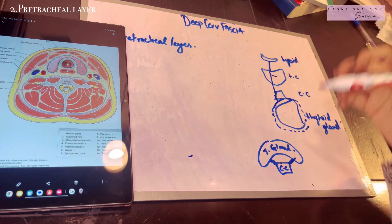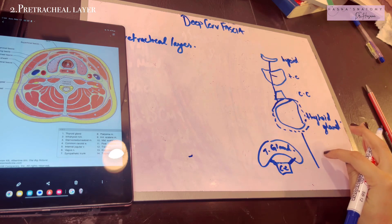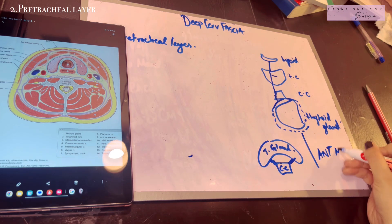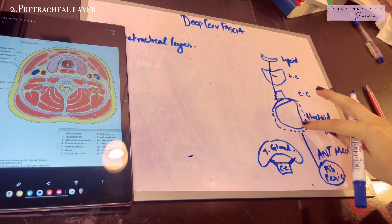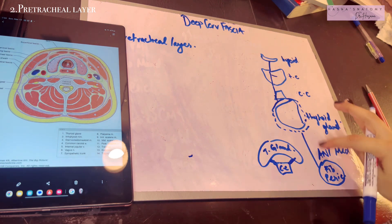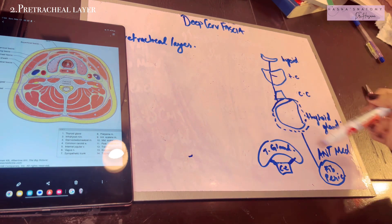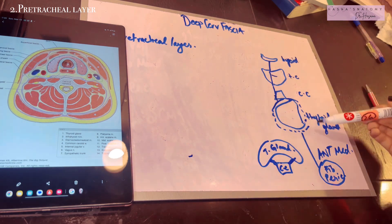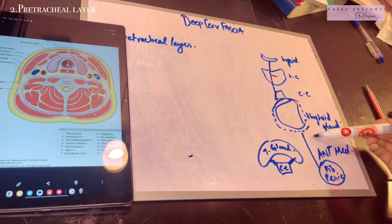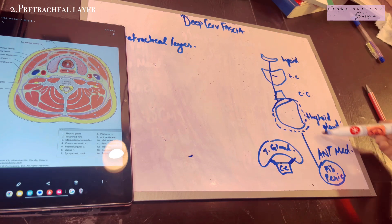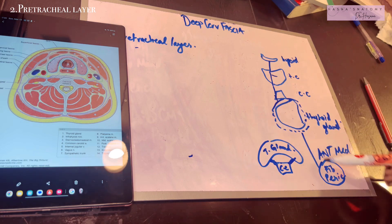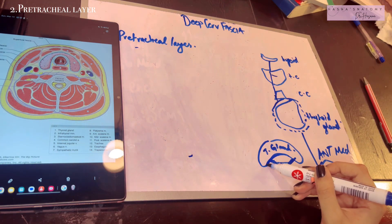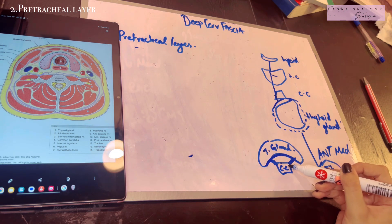Inferiorly, the pre-tracheal layer extends down into the anterior mediastinum because that is where the fibrous pericardium lies — it blends with the fibrous pericardium. This is very important: if there is any infection within this layer, neck infections can easily get transferred to the anterior mediastinum because of this attachment. Therefore, neck infections can enter the anterior mediastinum.